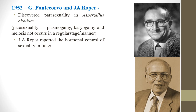Pontecorvo and Roper discovered parasexuality in Aspergillus nidulans in 1952. In parasexuality, plasmogamy, karyogamy, and meiosis do not occur in a regular manner, yet the organism gets benefits of sexual reproduction. Parasexuality is mainly seen in Deuteromycota group of fungi, now included in Ascomycota.